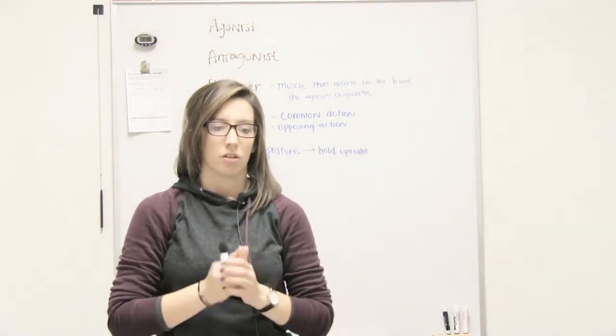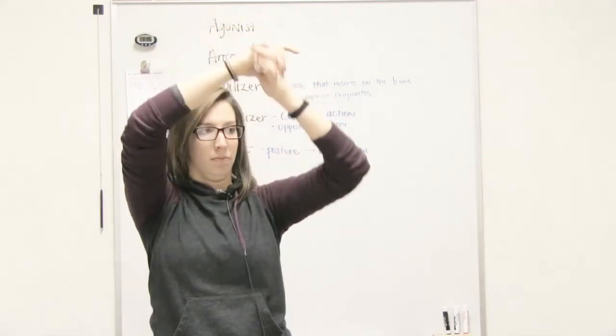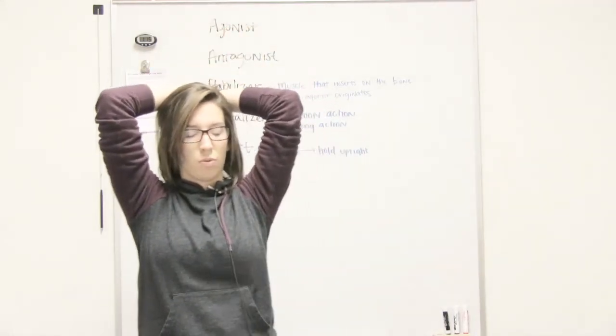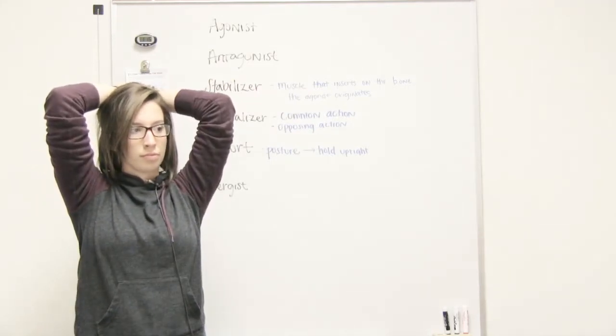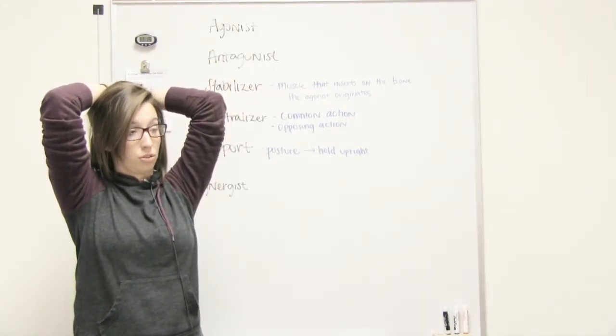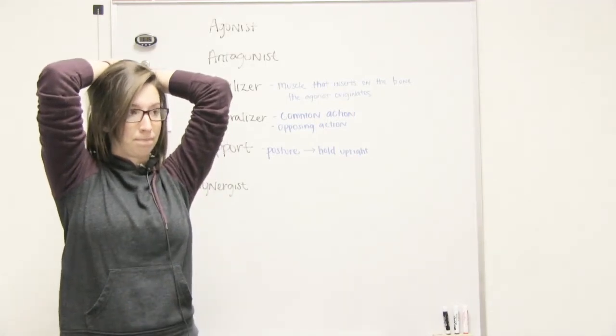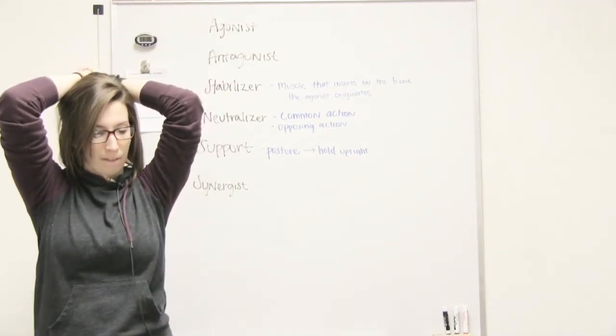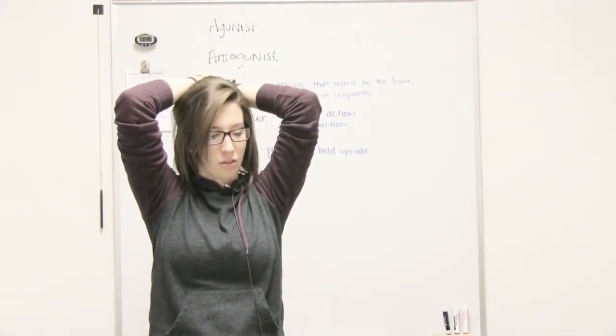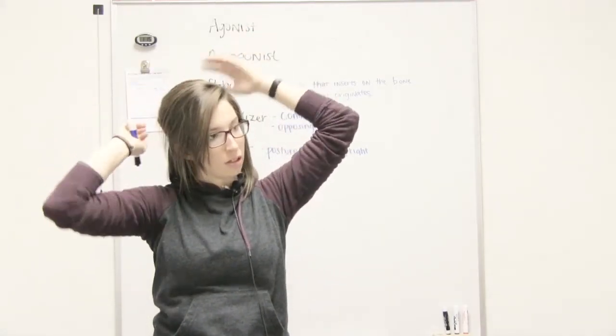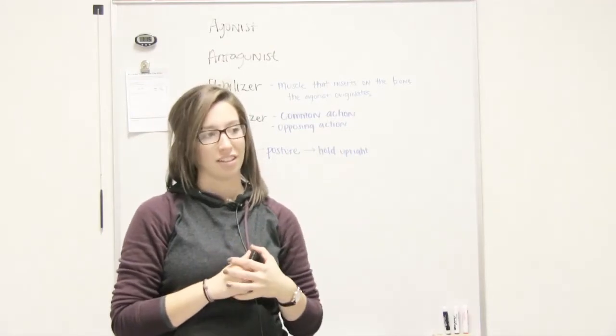Can you think of another elbow extensor? There's one more. I think deltoid, but I think that's a flexor though, isn't it? That's working on your shoulder, not your elbow. It starts with an A. And it's really small. Anconeus? Yep. That's exactly what it is.